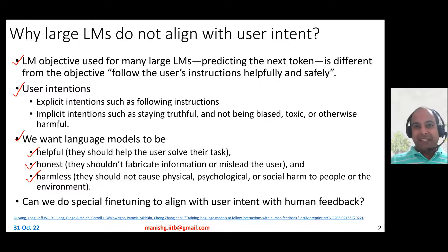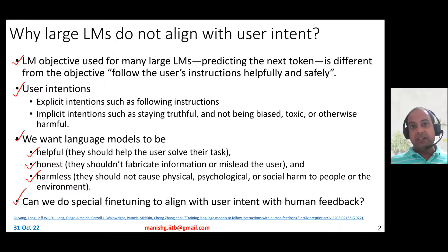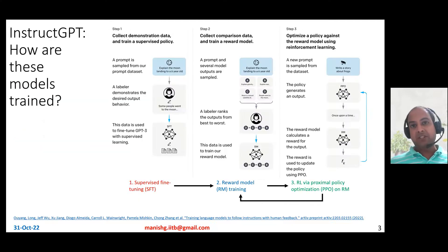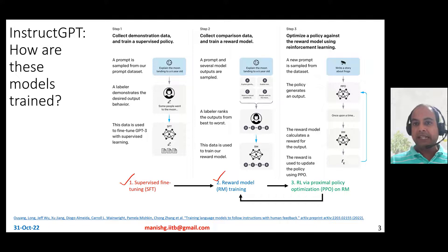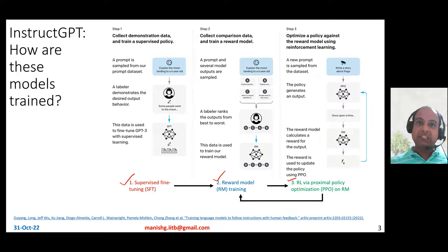If today's large language models do not align with user intent, then they are not really practically usable. So the question is: can we do some special fine-tuning of these models to make them align with user intent, maybe fine-tune with human feedback? The answer is in InstructGPT. InstructGPT models have been trained by OpenAI in three steps: step one is supervised fine-tuning, step two is reward model training, and step three is reinforcement learning via proximal policy optimization on the reward model.